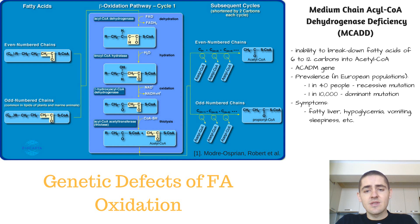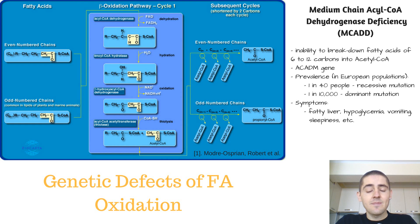The signs and symptoms of the disease include fatty liver, or accumulation of fat in the liver, higher circulating levels of octanoic acid — which is an 8-carbon fatty acid — hypoglycemia, vomiting, sleepiness, and in some situations it can even lead to coma.